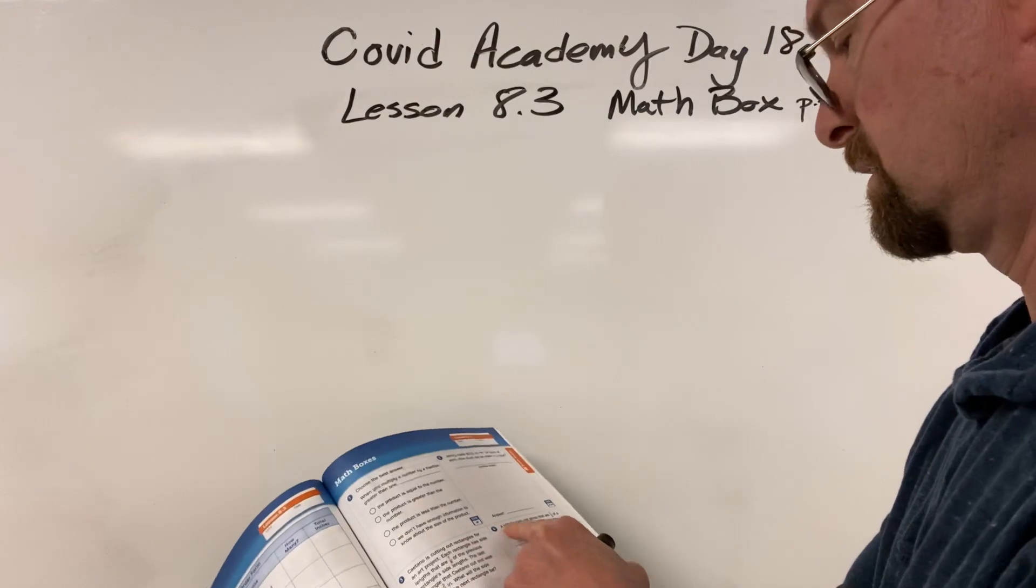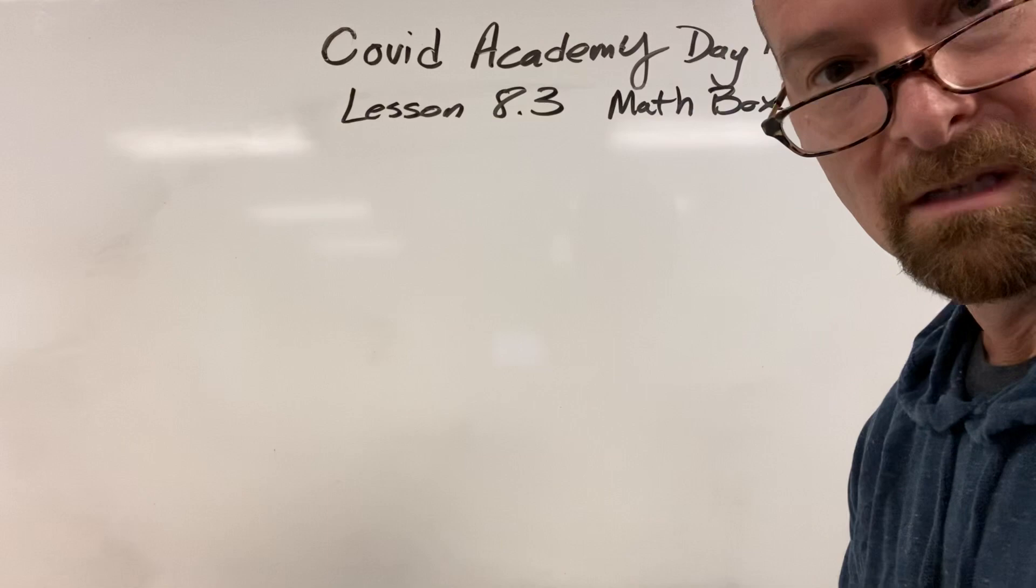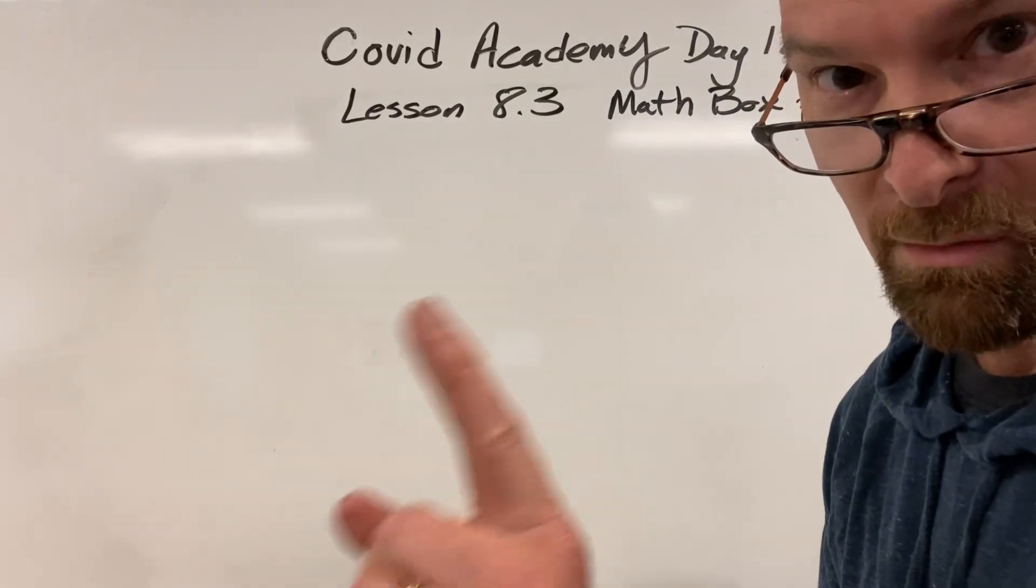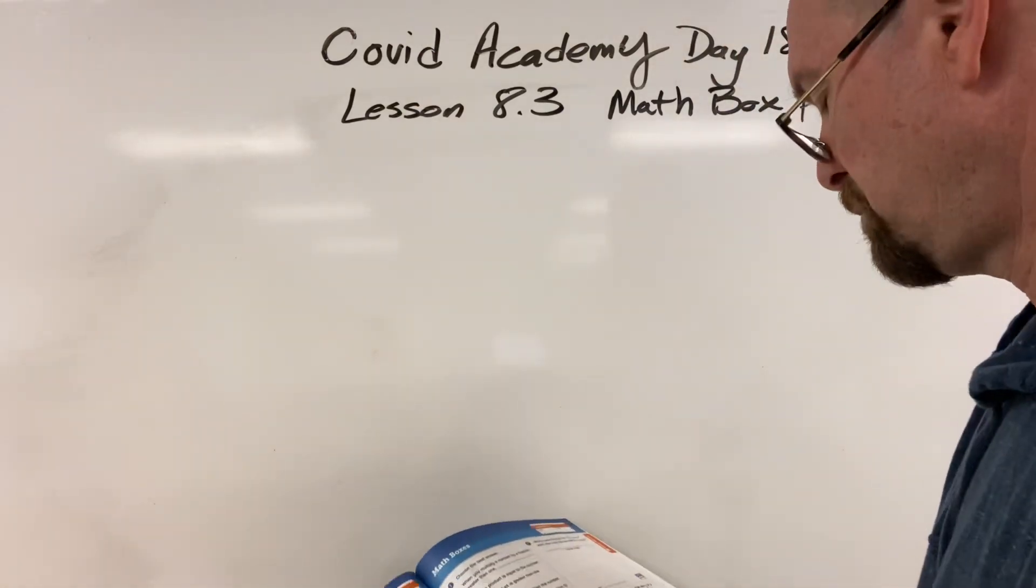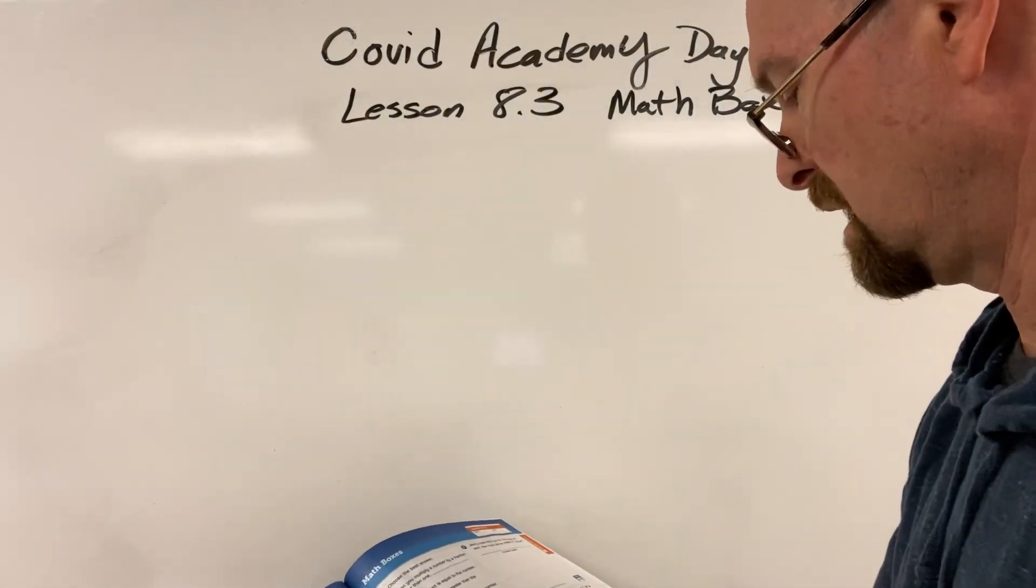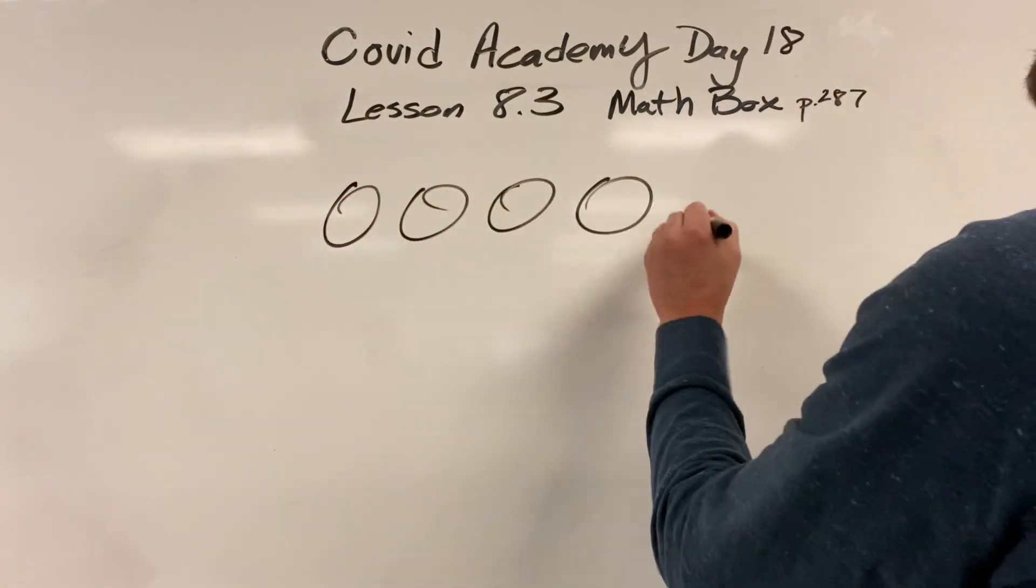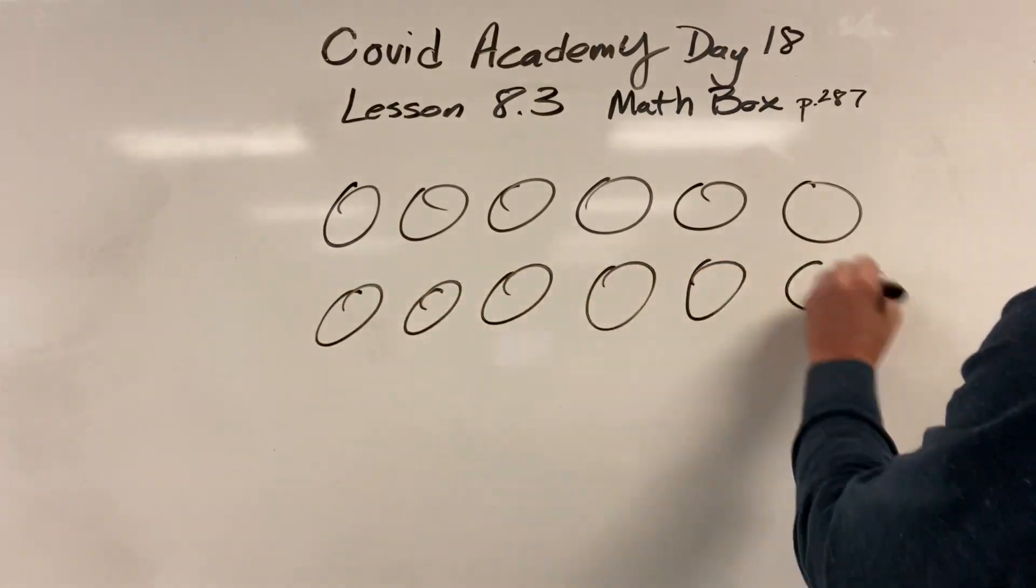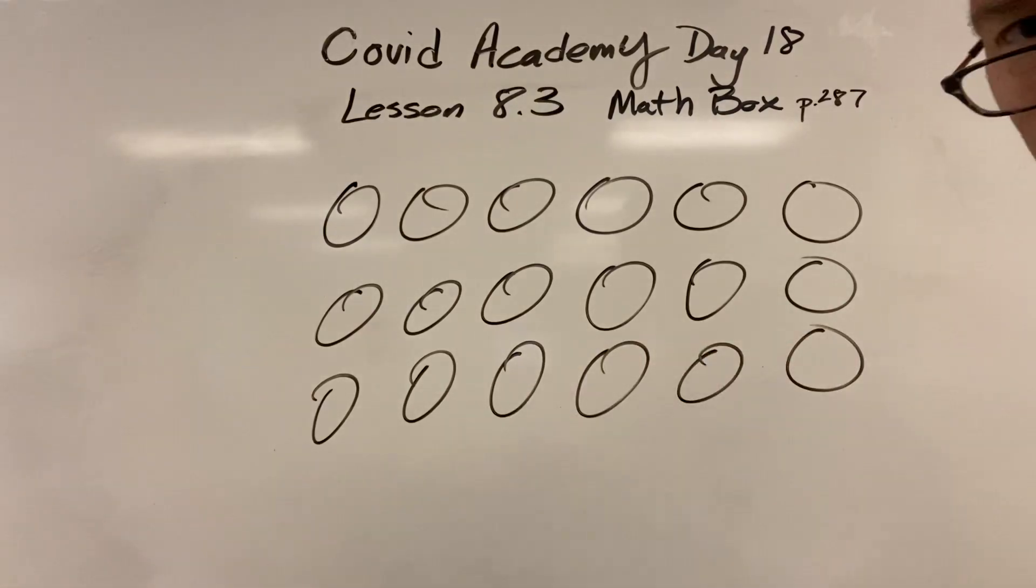Let's do the next one, number four. A bakery sells pie slices that are one-sixth of a pie. That sounds like a pretty good deal. A lot of places they sell you one-eighth. One-eighth is smaller than one-sixth. If they made eighteen pies, how many slices would they have? Let's make eighteen pies. Please don't draw eighteen things on the video and I have to watch you draw eighteen things. That did not take that long.